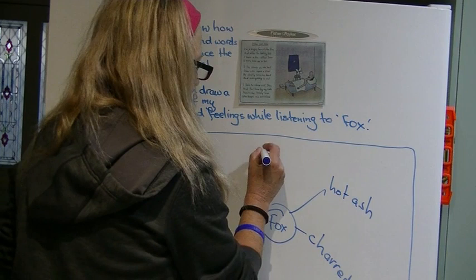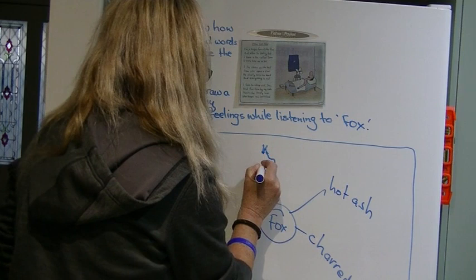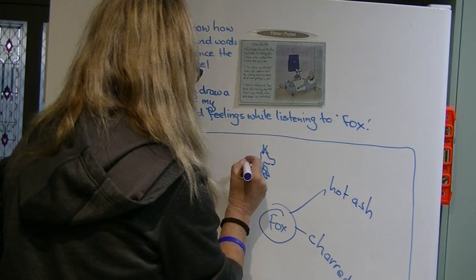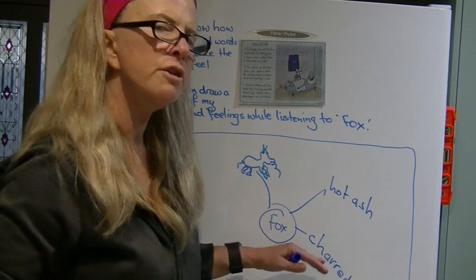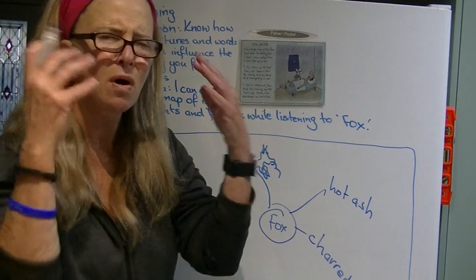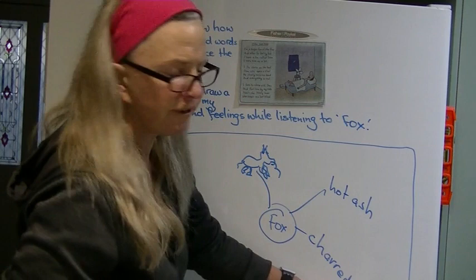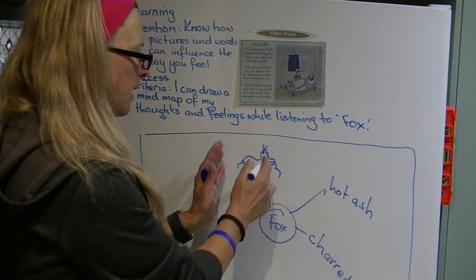I wish I could draw a dog — doesn't matter. Miss A would tell me to have a growth mindset, so there's my dog. His little legs. Needs other legs. And a broken bird. Magpie. You can use a combination of words and pictures. Some things that I loved about what I heard was hot ash, charred forest, and then the image of dog and magpie.